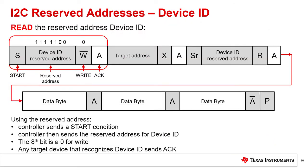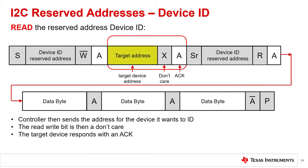Here, we'll show how a controller reads information with the device ID address. First, the controller sends a start condition. The first byte is sent with the reserved address for device ID and is followed by a 0 for a write. At this point, there may be multiple targets that may respond to device ID, so multiple devices may acknowledge this address. The controller then sends the address for the target device. The last bit of this target address byte is a don't care followed by an acknowledge. There should be only one device here that acknowledges this address.